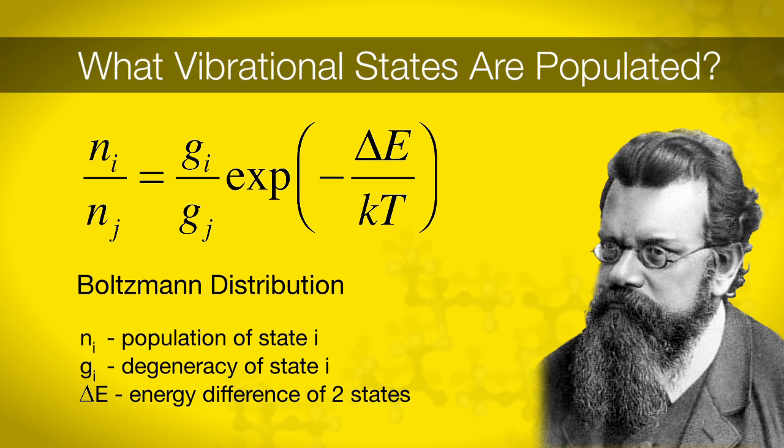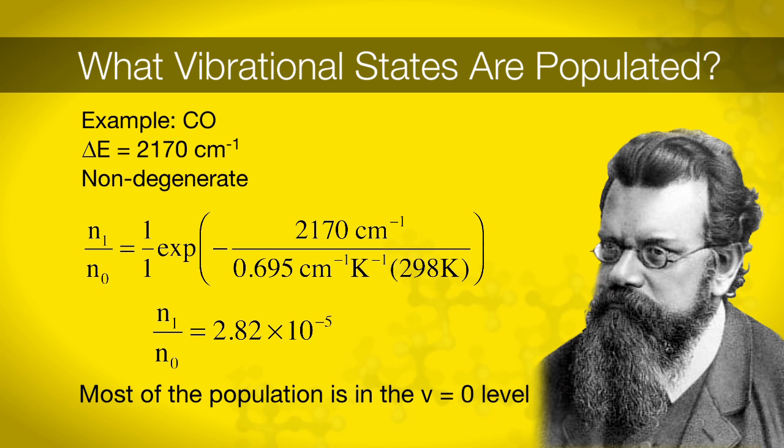Let's see what Boltzmann tells us about the population of vibrational states of carbon monoxide at room temperature. Carbon monoxide has an energy difference of 2170 wave numbers between its ground and first excited vibrational states. We will assume that the vibrational states both have a degeneracy of 1. From this, we calculate a ratio of 2.82 times 10 to the negative 5th. This tells us there are very few carbon monoxide molecules in the excited state at room temperature. If you look at table 19.2 in Engel and Reed, you find many molecules are in their ground vibrational state at room temperature. For our experiment, we can assume that the vibrations absorbed from the V equals zero state to the excited state.